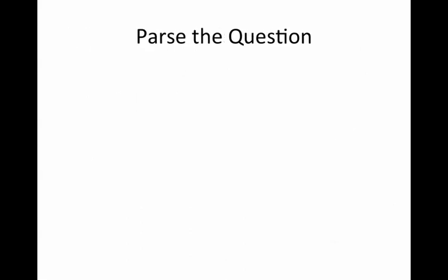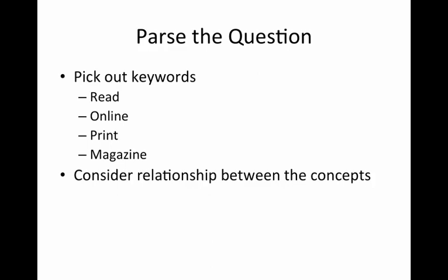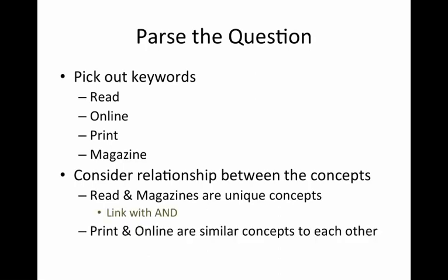The first thing you want to do is parse the question — pick out keywords from the sentence. The ones I've picked out are read, online, print, and magazine. Those are keywords you could use in Google or, preferably, in Communication and Mass Media Complete. Next, consider the relationship between the concepts. Read and magazines are unique concepts, so we link them with AND. Print and online are similar concepts, so we link them with OR.